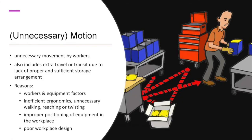The fourth waste is unnecessary motion. Unnecessary movement by workers leads to waste of time. It also includes extra travel or transit due to lack of proper and sufficient storage arrangement. Some of the reasons are inefficient ergonomics, unnecessary working, reaching or twisting, improper positioning of equipment in the workplace, and poor workplace design. Ergonomics refers to the study of people's efficiency in their working environment.